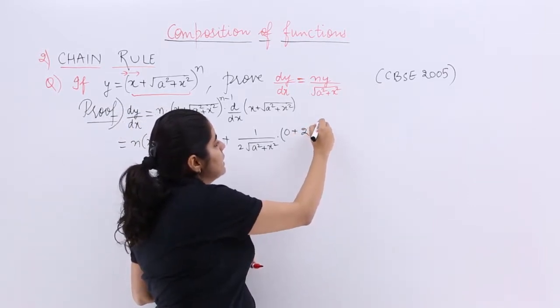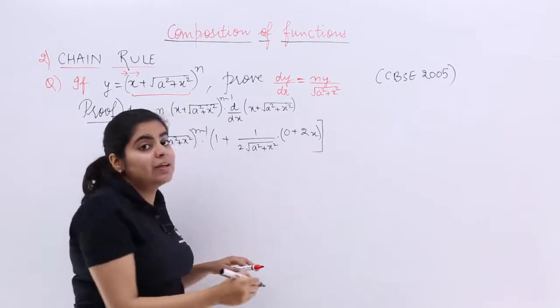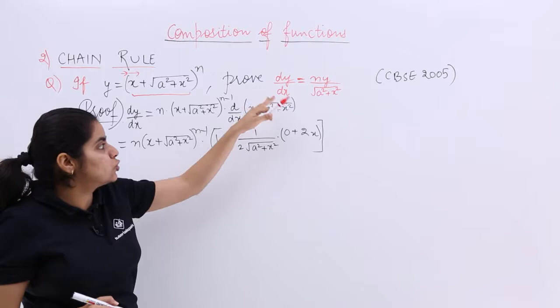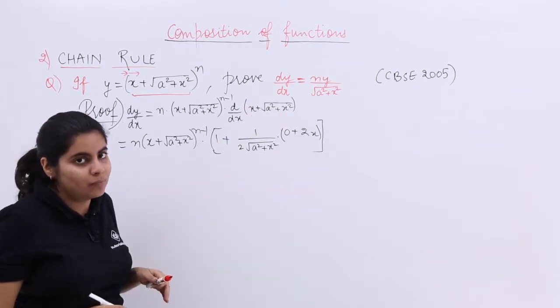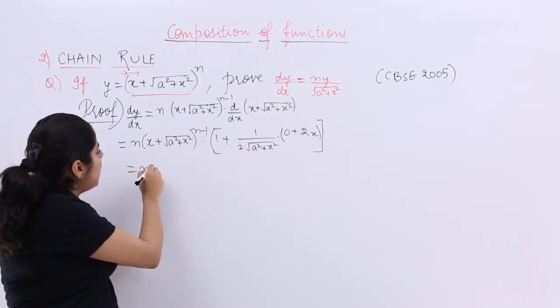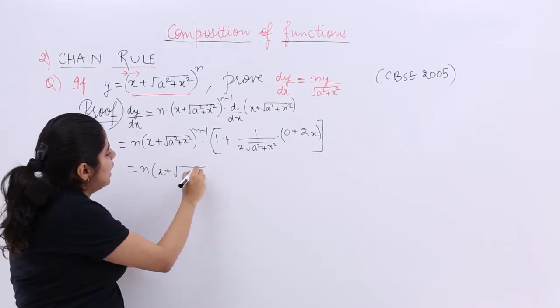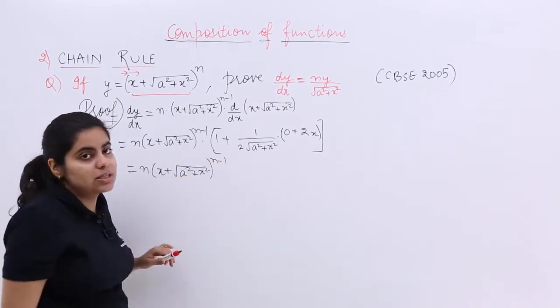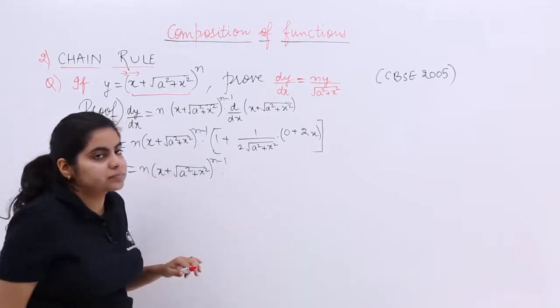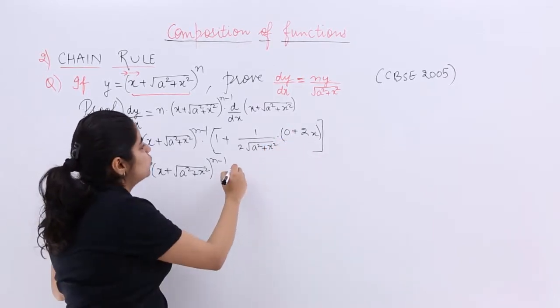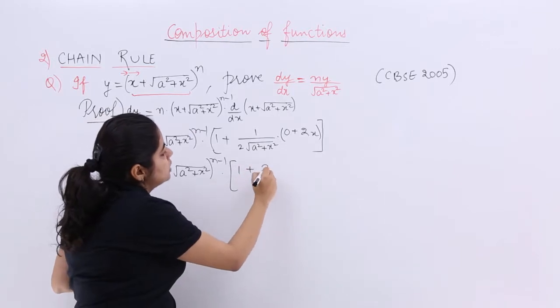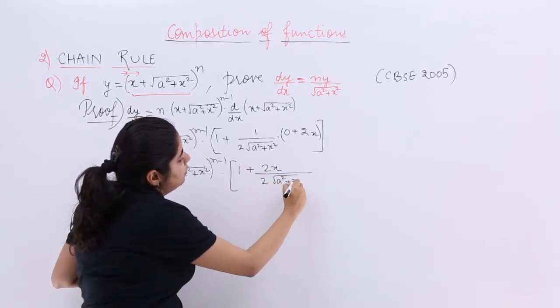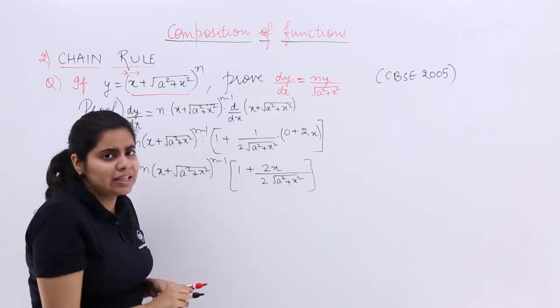If you are not following this, it is better you watch the previous video, chain rule question number 1, that will actually show you the differentiation of this thing as a whole. Continuing, nx plus under root a square plus x square power in minus 1 multiply. What is there? 0 plus 2x makes it 2x only. So 1 plus 2x upon 2 under root a square plus x square.